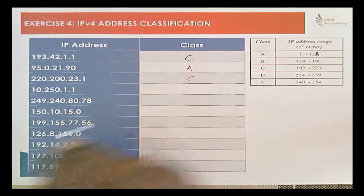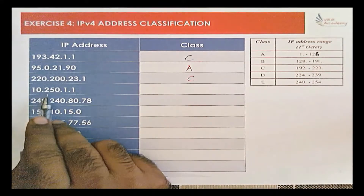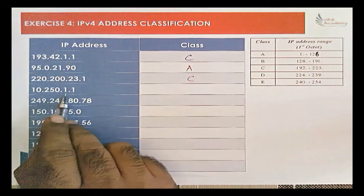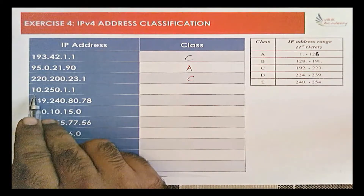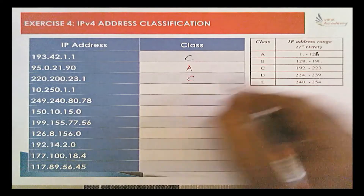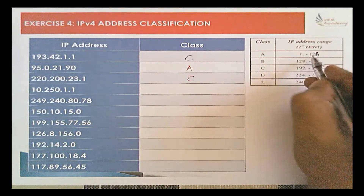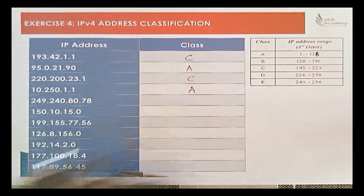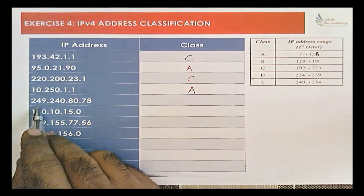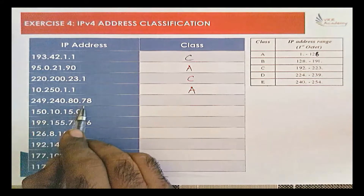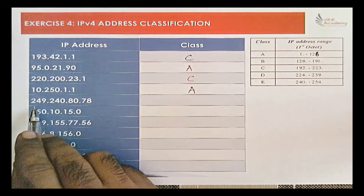Then 10.250.1.1 — the first octet is 10, which belongs to Class A as it is in the range of 1 to 126, so it is a Class A IP address. The next address is 249.240.80.78, where the first octet is 249.